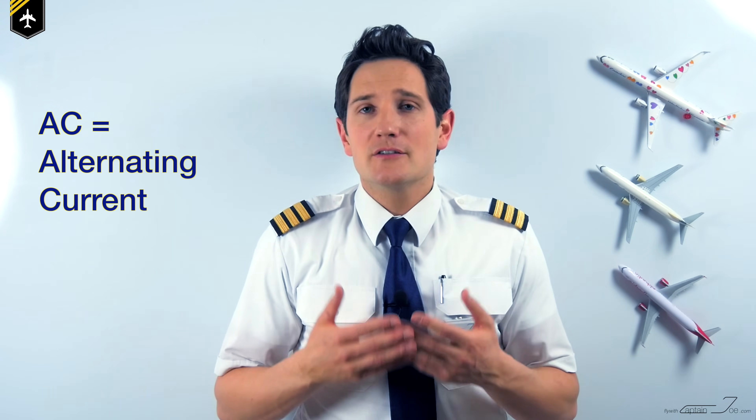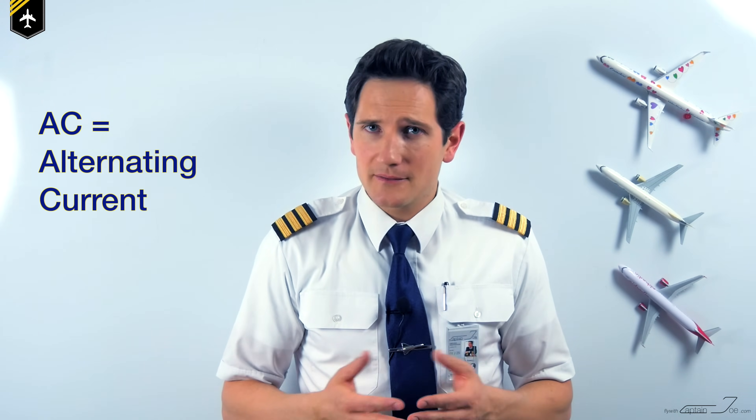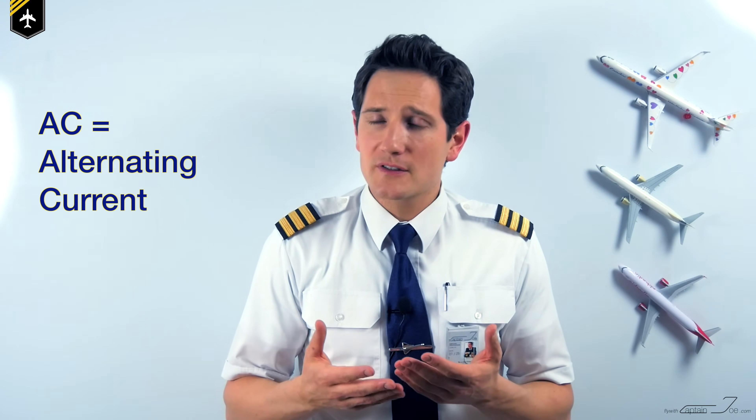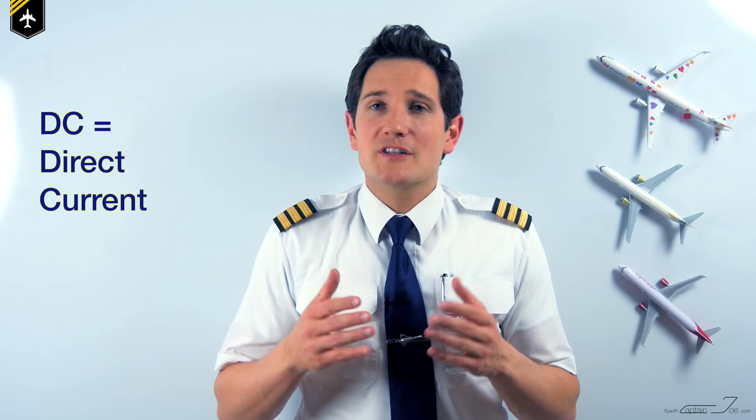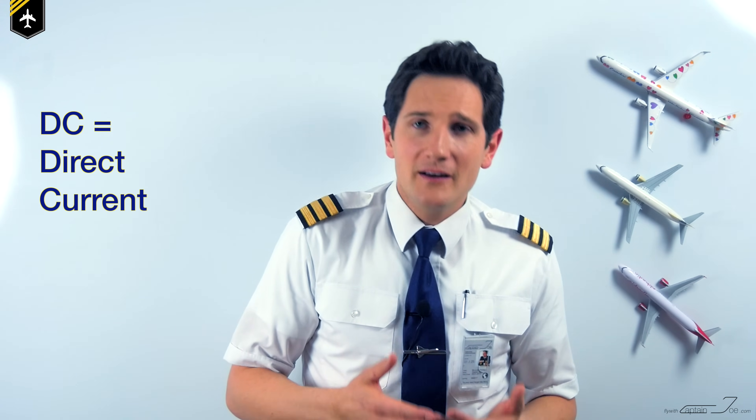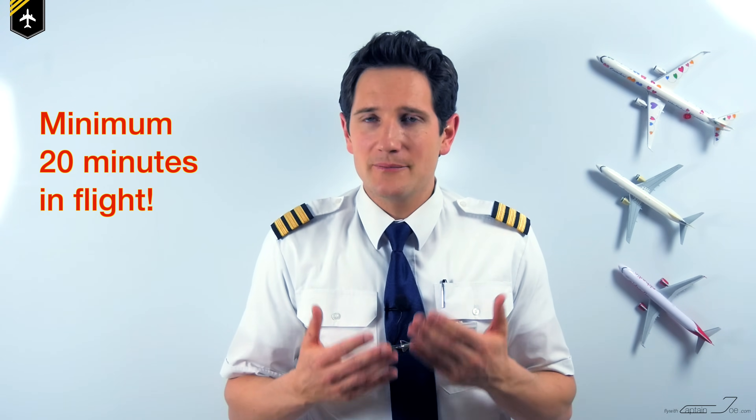Besides the fact that the main engines provide pressure to the hydraulic system, each engine has a generator producing AC power to feed the aircraft's electrical system. As a backup, you have the auxiliary power unit, the APU, which can power the entire system on the ground or in flight. Another backup are the batteries, which provide DC power, inverted to AC power for the necessary system supply — but they will only provide power for a minimum of 20 minutes in flight.